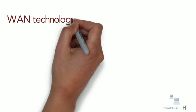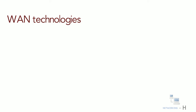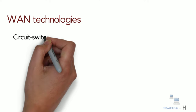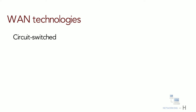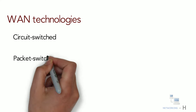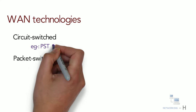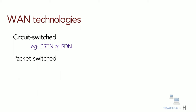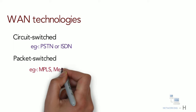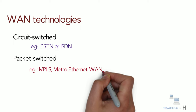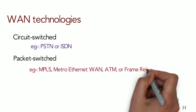WAN technologies are of two types: circuit switched and packet switched. Circuit switched technologies such as PSTN or ISDN are legacy, and packet switched technologies include MPLS, Metro Ethernet WAN, ATM, or Frame Relay.